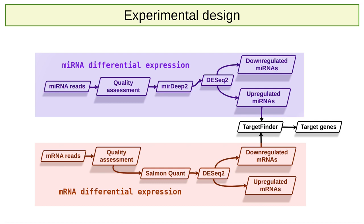Now we will introduce the experimental design on which the analysis is based. As mentioned above, we can divide the analysis into three stages: differential expression of microRNAs, differential expression of mRNAs, and target identification. The starting hypothesis is that there should be sequence complementarity between upregulated microRNAs and downregulated mRNAs. In this tutorial, we will focus on the differential expression of microRNAs. The results obtained will be used later for target identification using the TargetFinder tool.